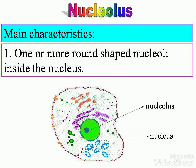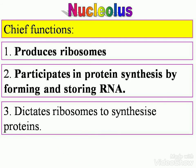Nucleolus. Main characteristics: one or more round-shaped nucleoli are found inside the nucleus. The number may vary according to the cell — if it's one, it's nucleolus; if there are many, it's nucleoli. Chief functions: it produces ribosomes, participates in protein synthesis by forming and storing RNA — ribonucleic acid — and dictates ribosomes to synthesize proteins.